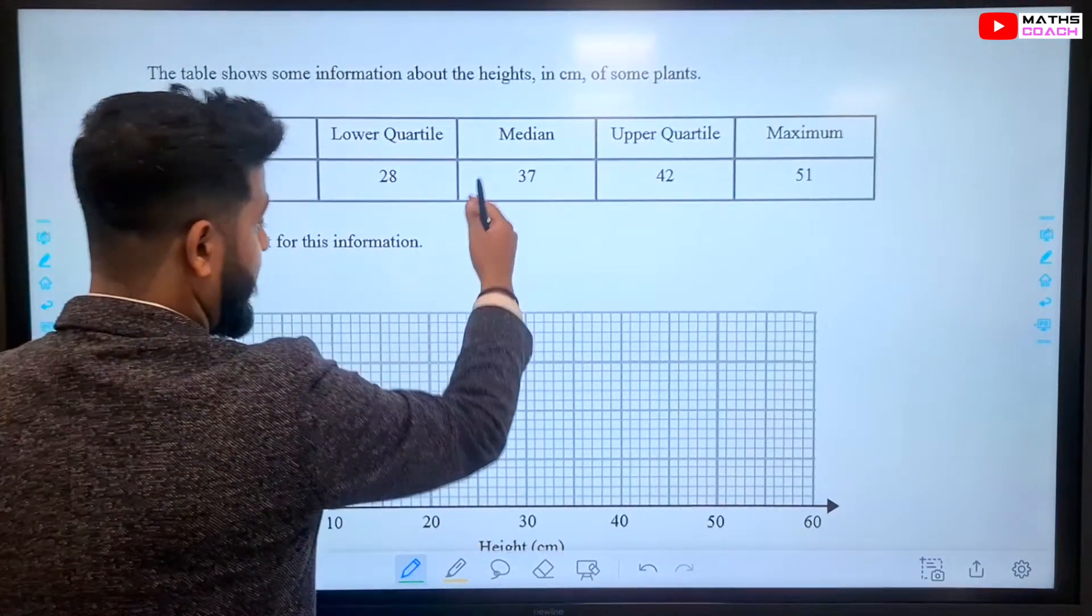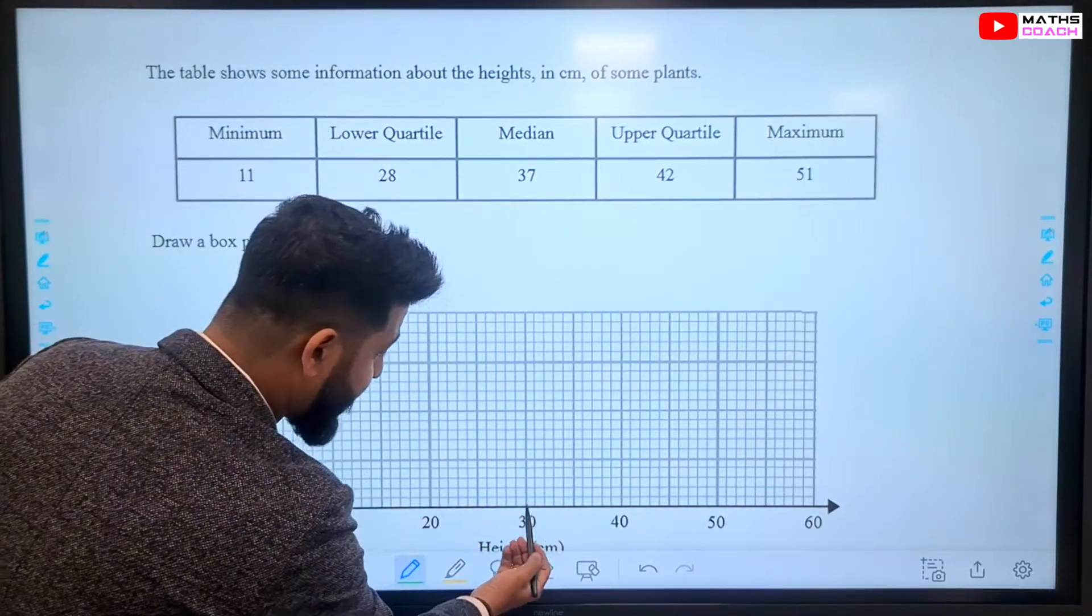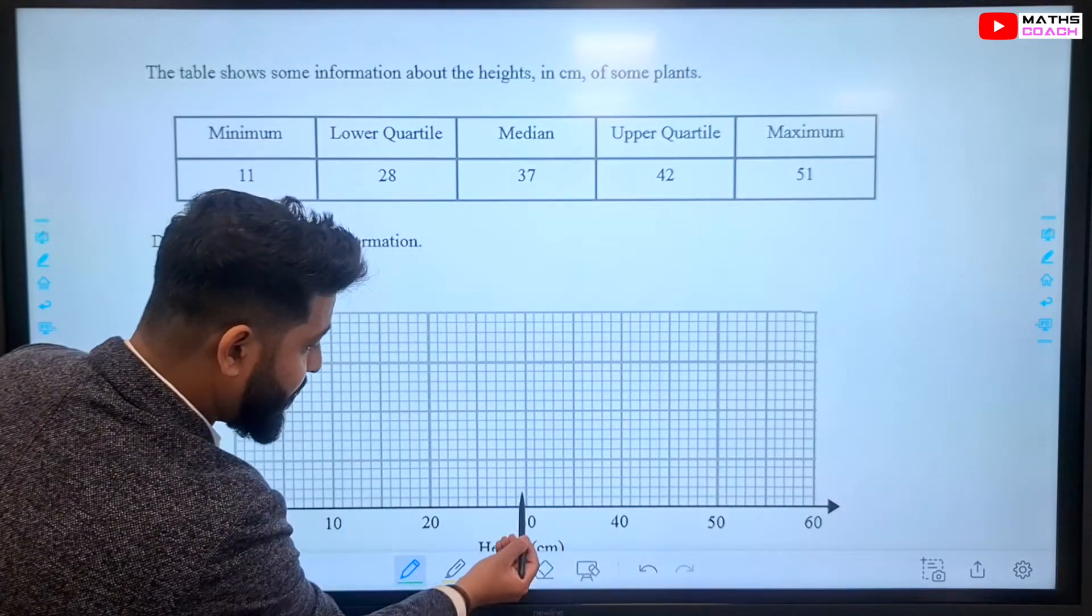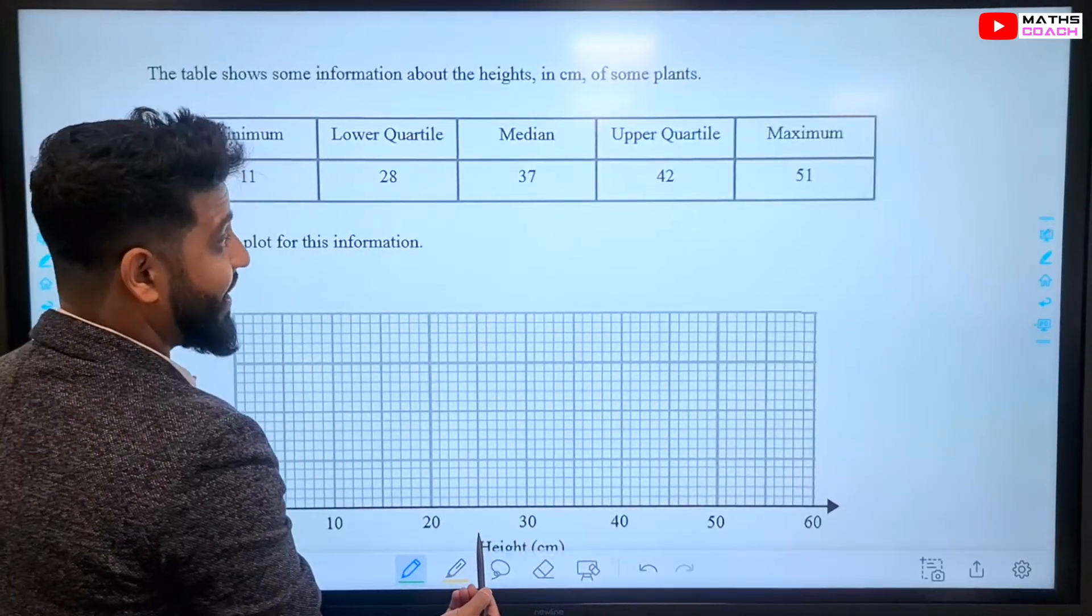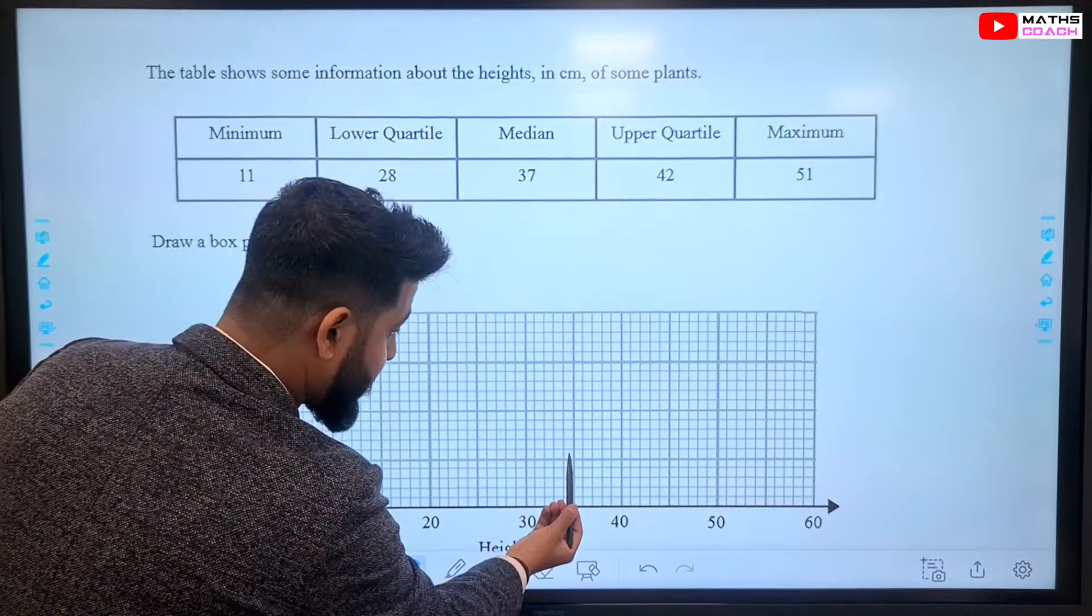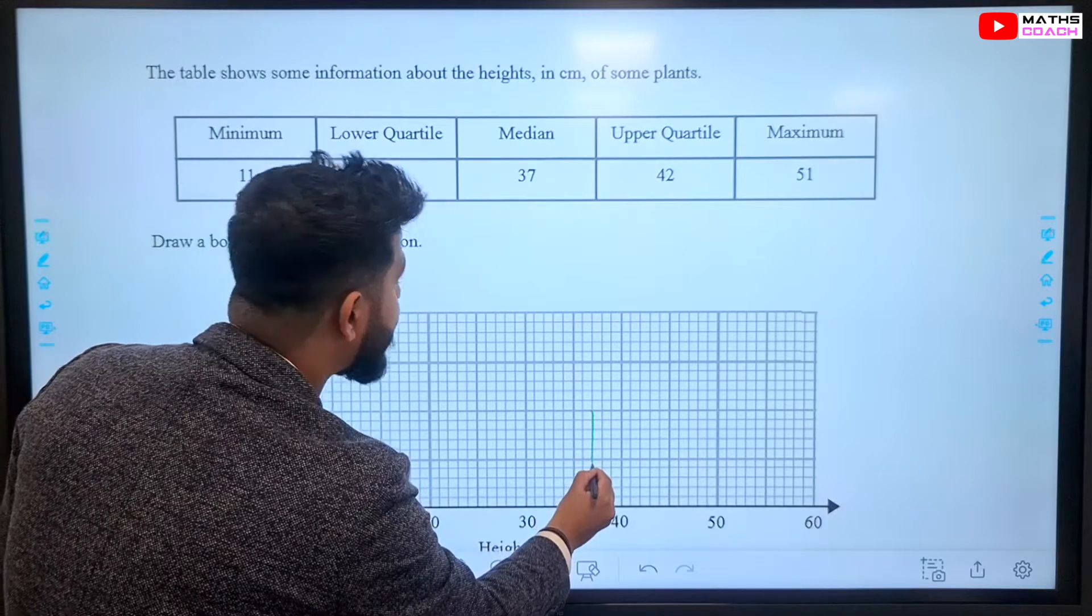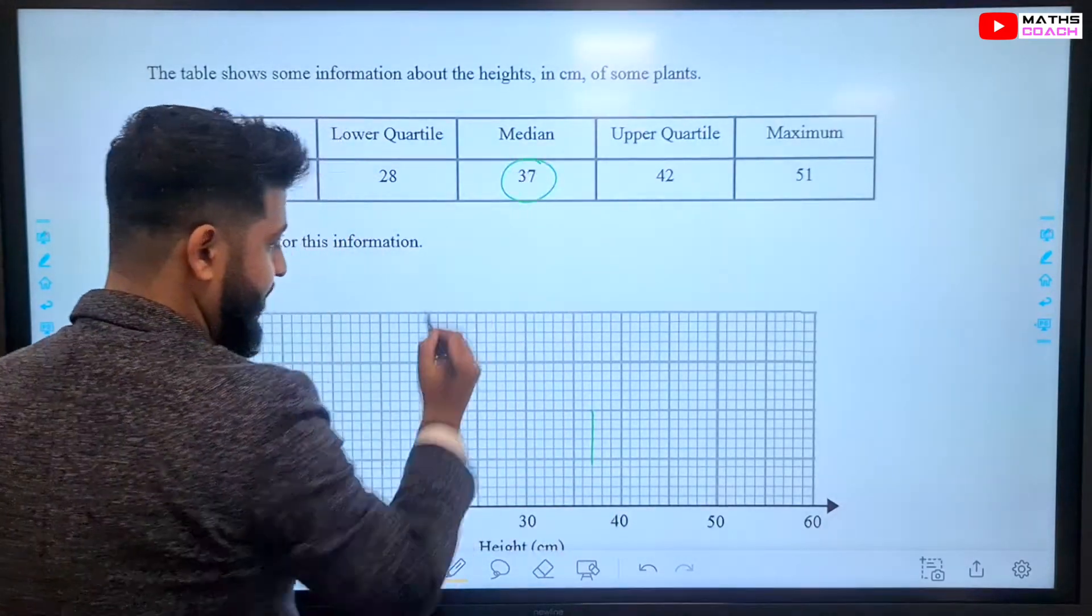Let's start off with our median, which is on 37, so 30 to 40. There are 10 squares in between, which means each small square is equivalent to 1. So, this is 35, 36, 37. Let's just draw our median right there. That's our median done.